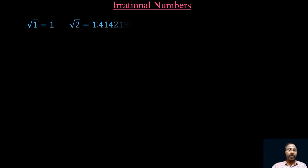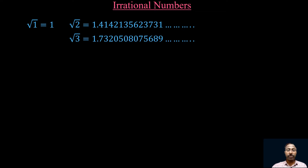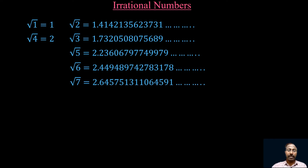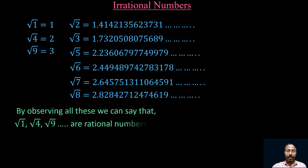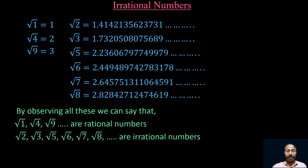Root 1 = 1, root 2 = 1.4142135..., root 3 = 1.73205080..., root 4 = 2, and root 5, root 6, root 7, root 8 have non-terminating values, while root 9 = 3. By observing all these, we can say that root 1, root 4, and root 9 are rational numbers because 1, 2, and 3 can be expressed as p/q (e.g., 1=1/1, 2=2/1, 3=3/1). But root 2, root 3, root 5, root 6, root 7, and root 8 are non-terminating and non-recurring decimals, so they are irrational numbers.